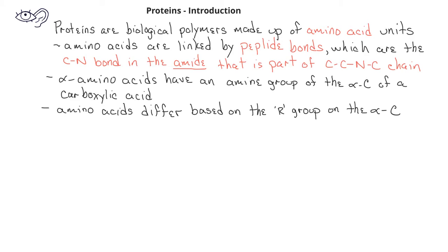When we have multiple amino acids linked together, we can classify them based on how many amino acids are linked. If we have two amino acid units linked together, we call the combined structure a dipeptide.